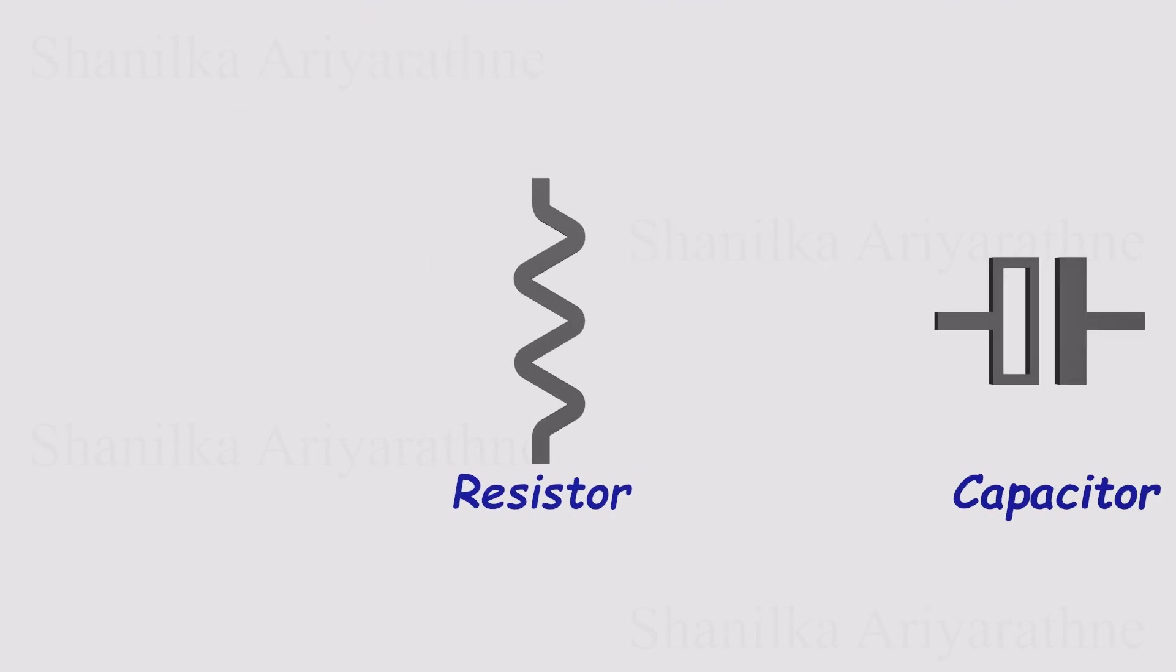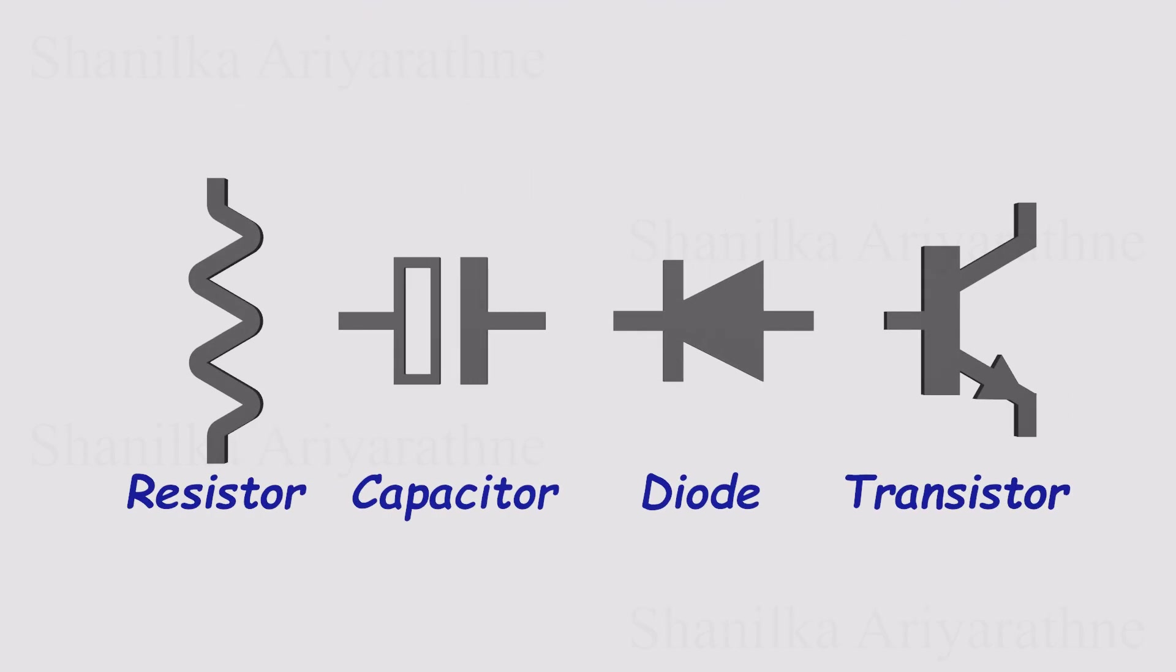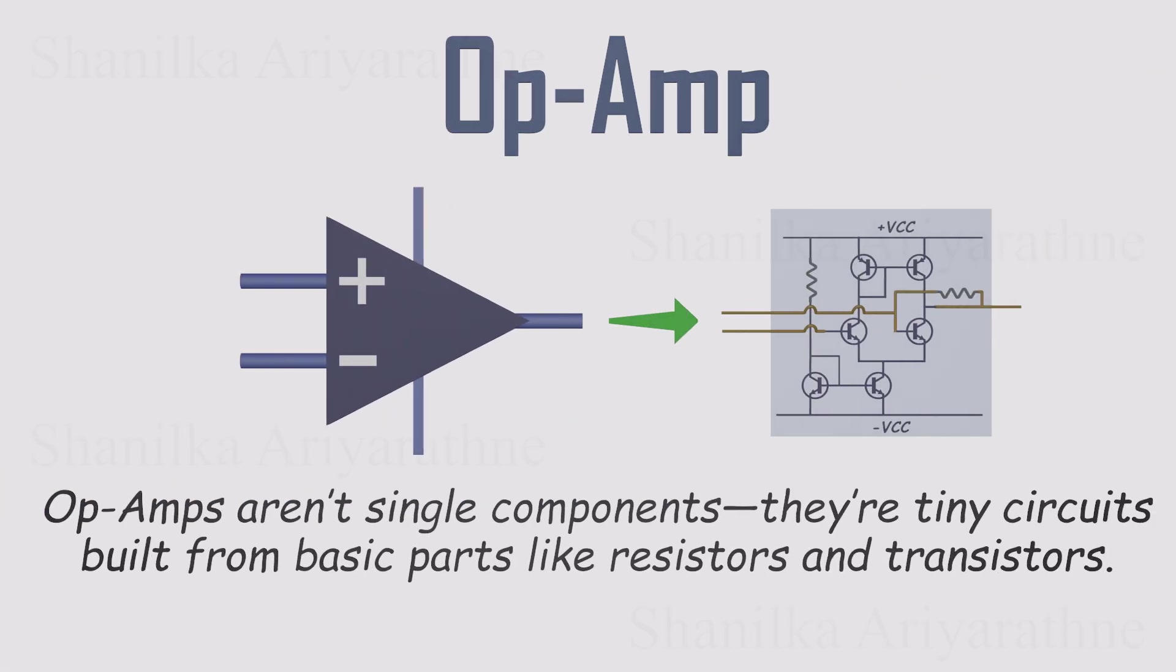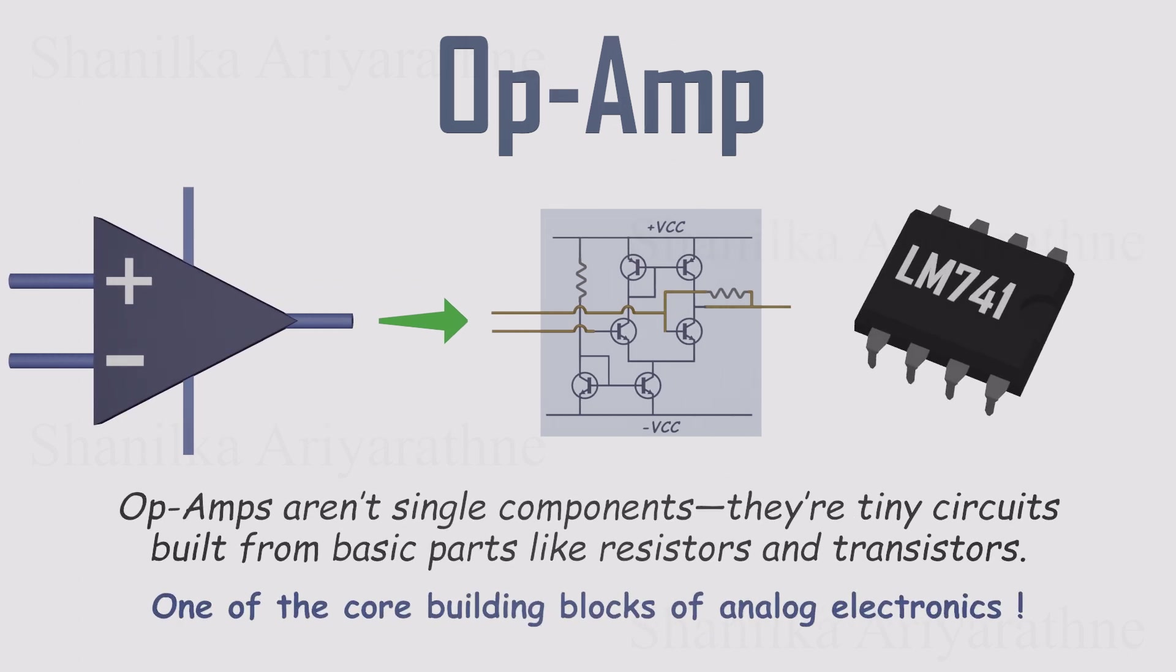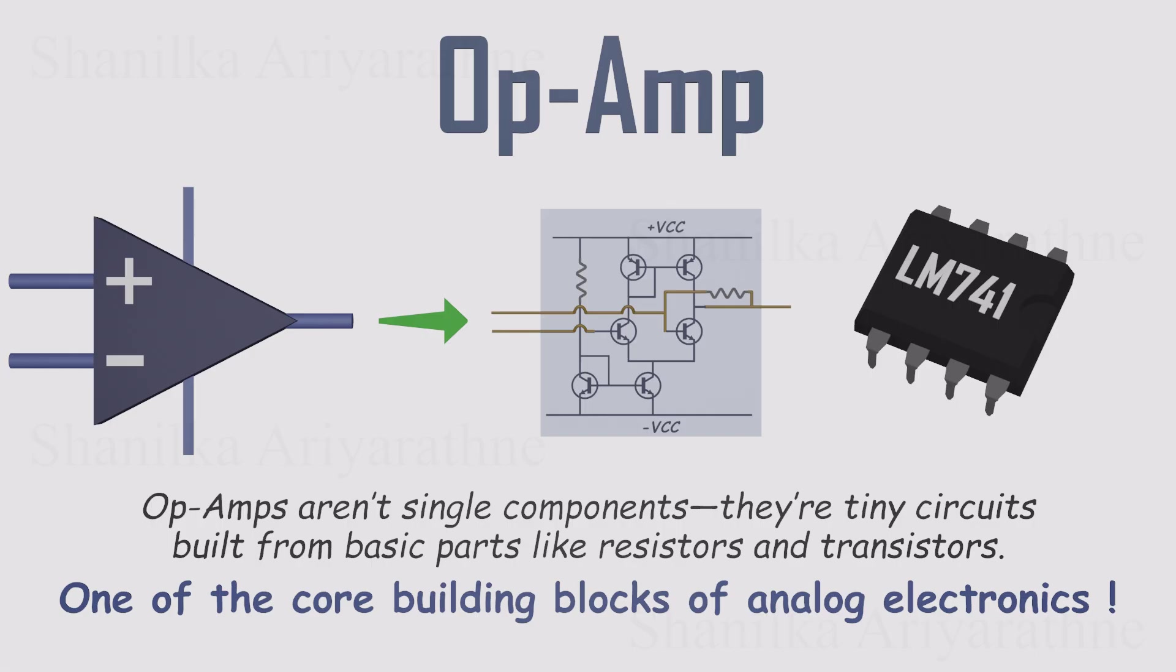Unlike a resistor, capacitor, or even a transistor, an op amp isn't just one single part. It's actually a whole circuit built from those building blocks, all packed neatly into one tiny chip. That's why they come as ICs, integrated circuits.